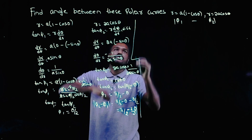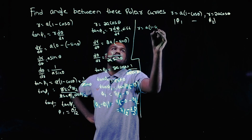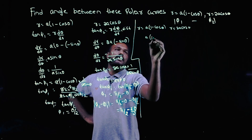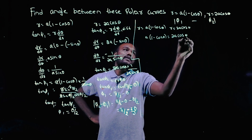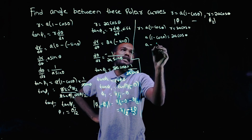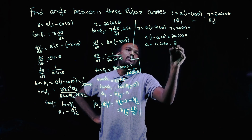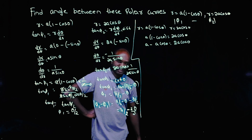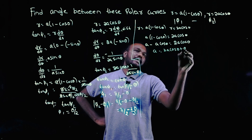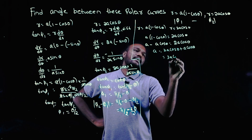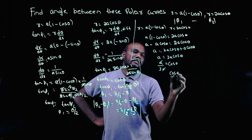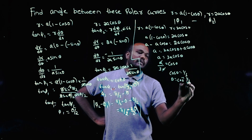Now let's find the value of θ. Since both expressions equal r, we set a(1 - cosθ) = 2a cosθ. Expanding: a - a cosθ = 2a cosθ, so a = 3a cosθ, giving cosθ = 1/3. Therefore θ = cos⁻¹(1/3).